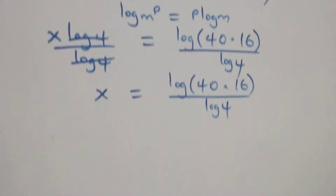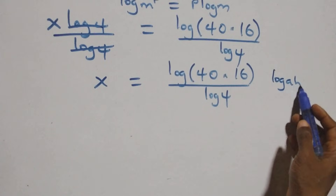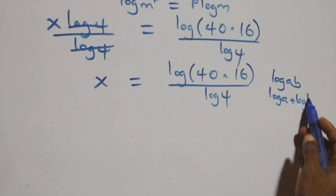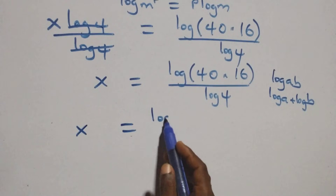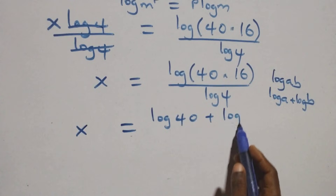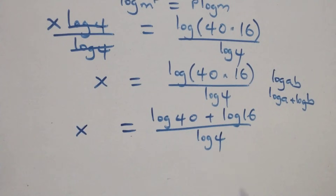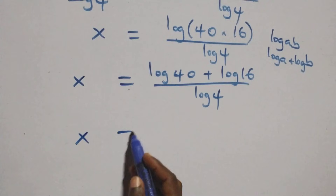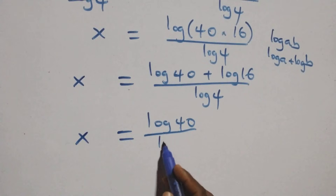Now we apply the law of logarithms: log(a times b) is the same as log a plus log b. So x equals log 40 plus log 16, all over log 4.